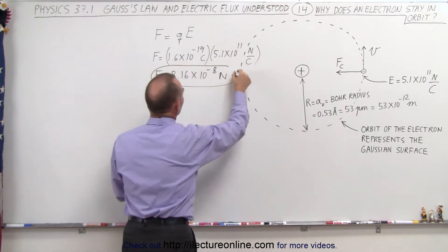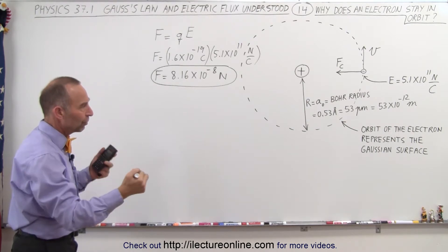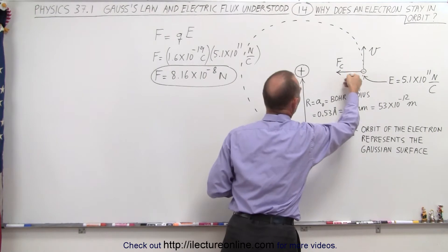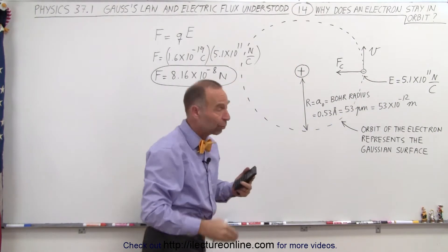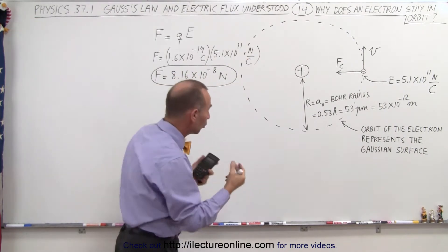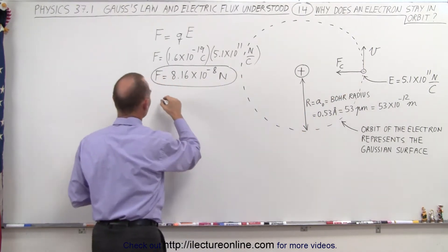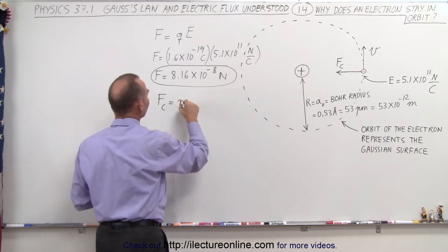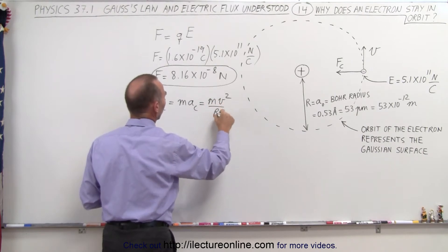The result is 8.16 times 10 to the minus 8 newtons — that's an absolutely enormous force between a single proton and a single electron. That force provides what we call the centripetal force that pulls the electron inward. Without that force, the electron, since it's moving pretty fast, would simply move straight and leave the proton. But the Coulomb force does provide that centripetal force, and we know that the centripetal force equals mass times centripetal acceleration, which is m times v squared over r.